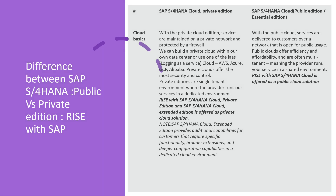For public cloud edition, services are delivered to customers over a network that is open for public use. Public cloud offers efficiency and affordability and is often multi-tenant, meaning the provider runs your services in a shared environment. RISE with SAP S/4HANA Cloud is offered as a public cloud solution. This is the basic difference between private and public edition on cloud.